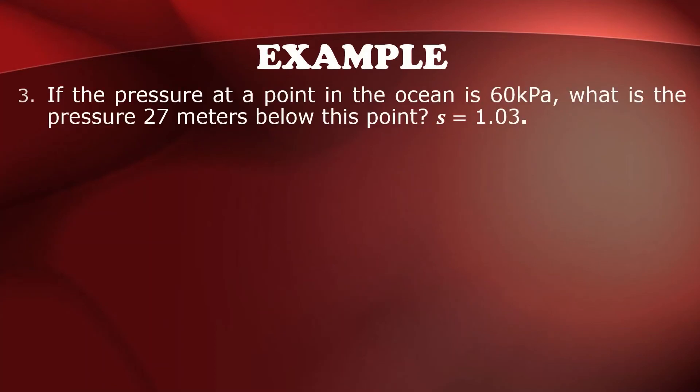Third example, if the pressure at a point in the ocean is 60 kilopascal, what is the pressure 27 meters below this point? And we can also use for the specific gravity of the salt water, which is 1.03 since it lies in the ocean. And given P1 is 60 kilopascal, H is 27 meters, we are going to calculate the second pressure.